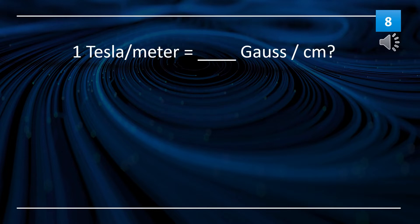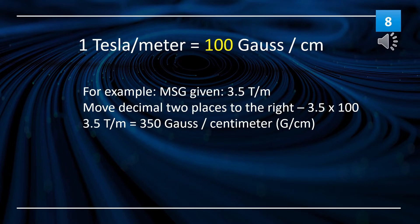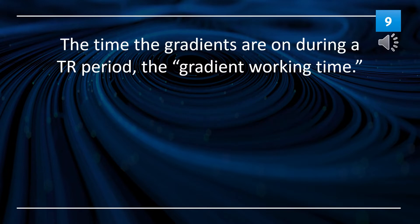One tesla per meter equals how much gauss per centimeter? One tesla per meter equals 100 gauss per centimeter. The time the gradients are on during a TR period — the gradient working time — is defined as duty cycle.